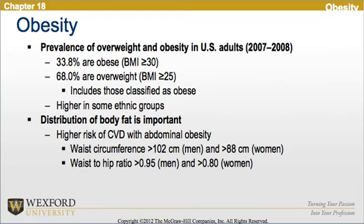The distribution of body fat is important. There is a higher risk of cardiovascular disease with abdominal obesity, which includes a waist circumference greater than 102 centimeters in men and 88 centimeters in women, and a waist-to-hip ratio greater than 0.95 in men and 0.8 in women.